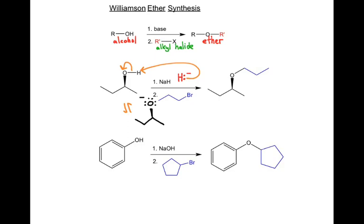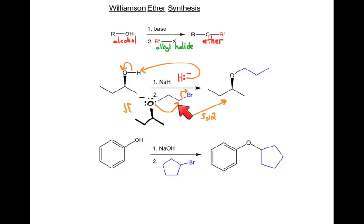In step two, we simply do an SN2 reaction — backside attack — and that gives us our final product. All the normal rules of SN2 apply. If the alkyl halide carbon is a stereocenter, you get inversion of stereochemistry at that carbon. But all other stereochemistry — like this wedge — is maintained. So: step one, sodium hydride deprotonates to form the alkoxide, making a very good nucleophile. Step two, we add the alkyl halide electrophile and do the SN2 reaction to get our final product and the new C–O bond.